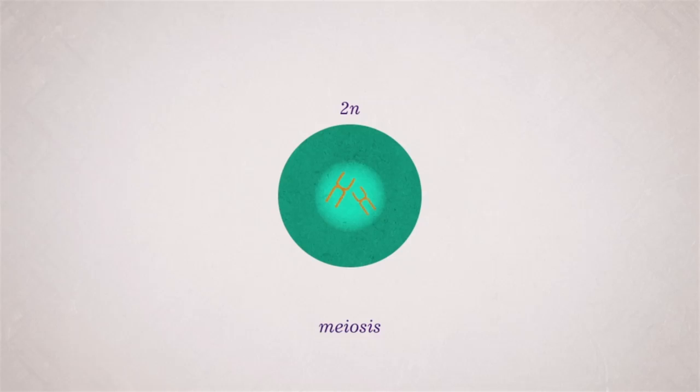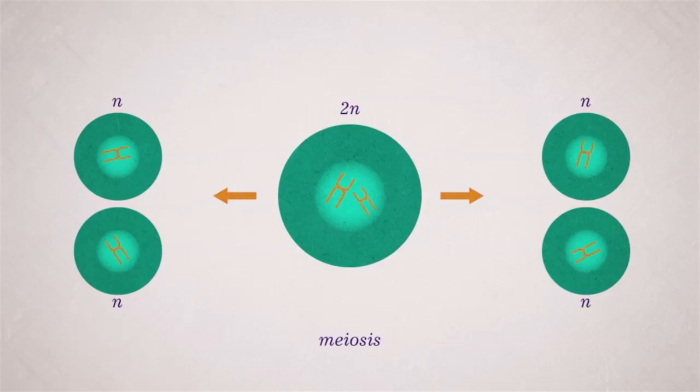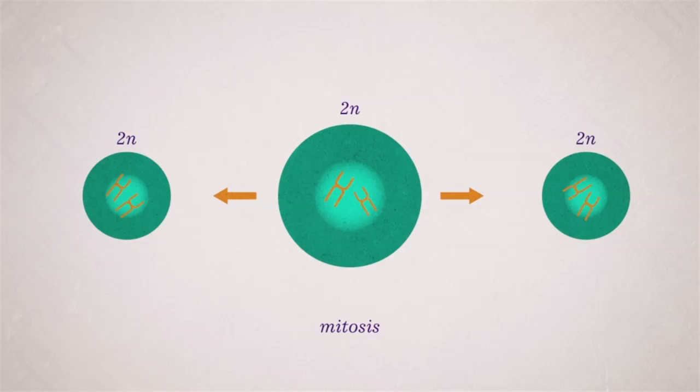On the one hand, meiosis is vital for sexual reproduction and produces gametes with half of the usual set of chromosomes. Mitosis in humans, on the other hand, produces cells with what's known as a diploid set of 46 chromosomes.